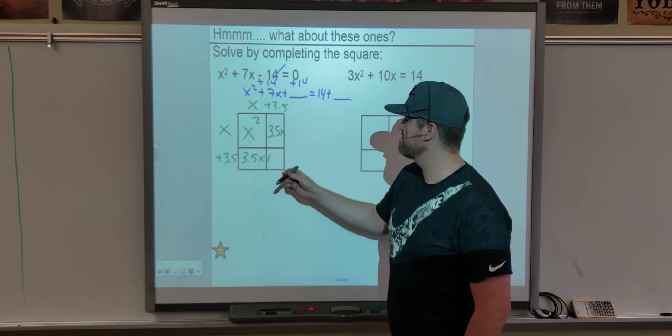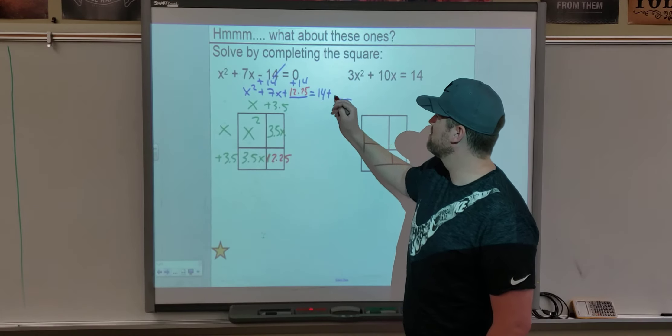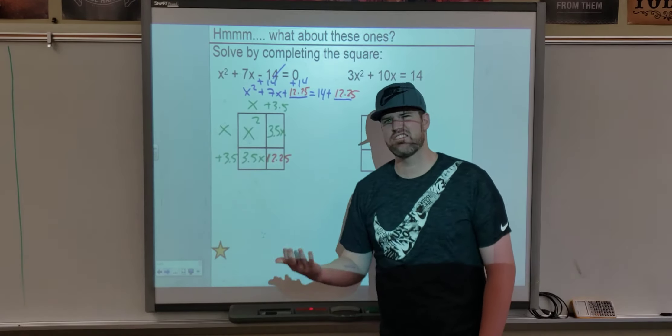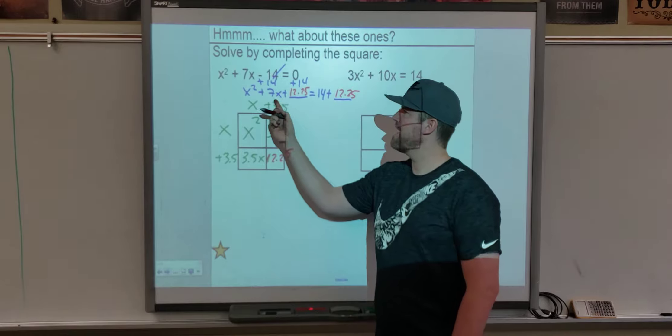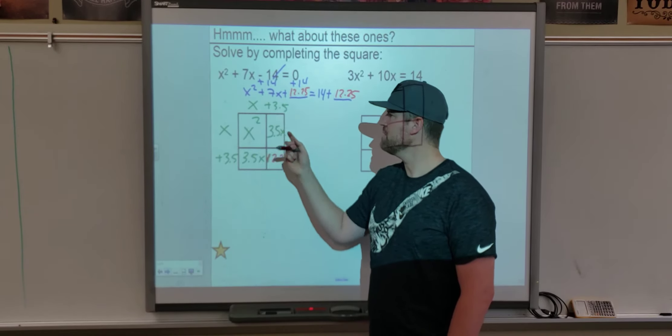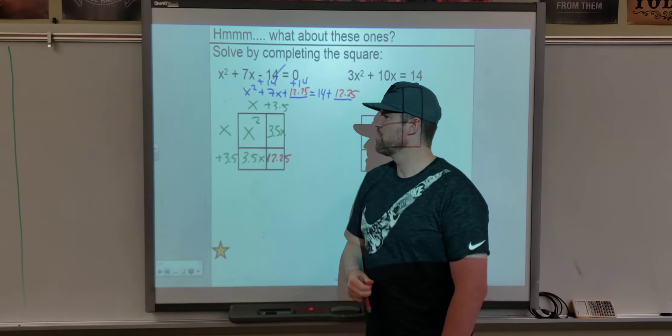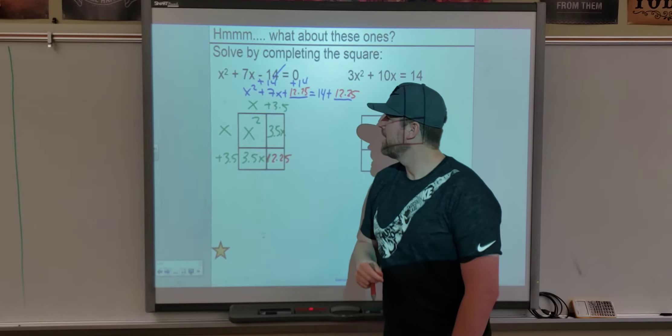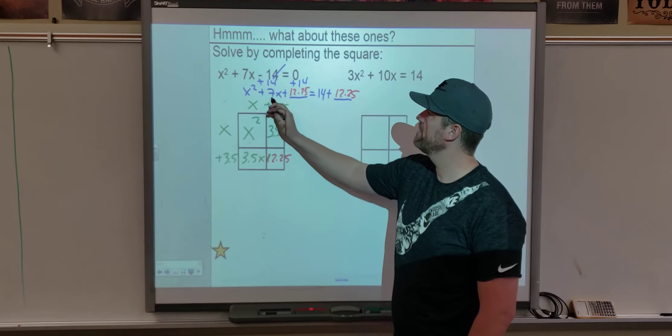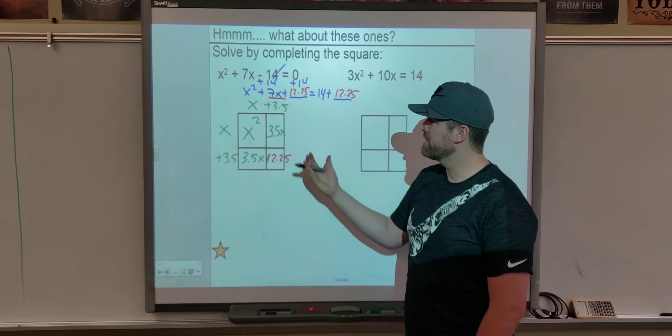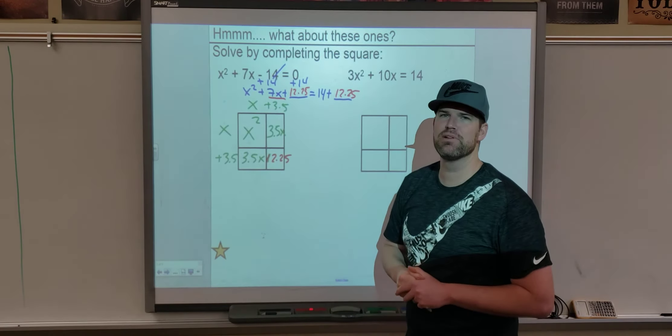Now I need to multiply 3.5 times 3.5. Well, let me grab my calculator. That's 12.25. So 12.25 is my new c value. I'm going to add that to both sides. Now, I could keep going on this problem. We could actually solve it, and it wouldn't be that bad. It's just decimals. But typically, if we have an odd number in the middle, because we're getting decimals and because it makes things a little bit more cumbersome, look that word up, or a little bit more challenging, we typically go away from completing the square if we have to split the middle and get a decimal.